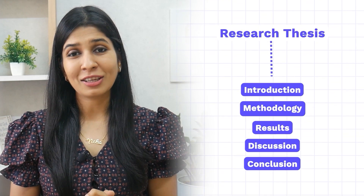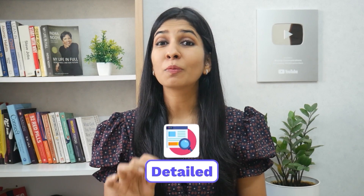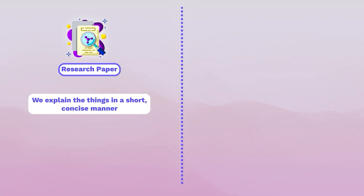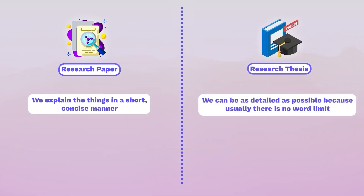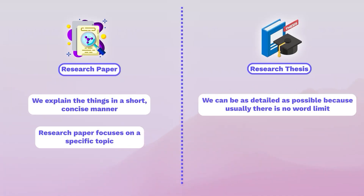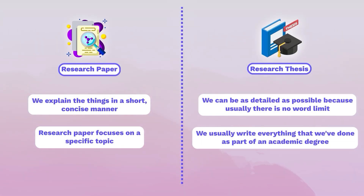Similarly, in a research thesis we have these sections. What makes it different from a research paper is that it is much more detailed. Usually in a research paper we explain things in a short, concise manner. But in a thesis we can be as detailed as possible because usually there is no word limit. Another difference is that a research paper focuses on a specific topic, but our research as part of an academic degree could cover multiple topics and multiple areas.